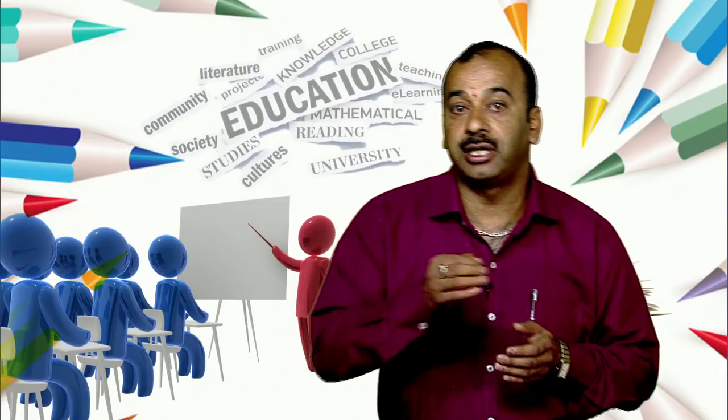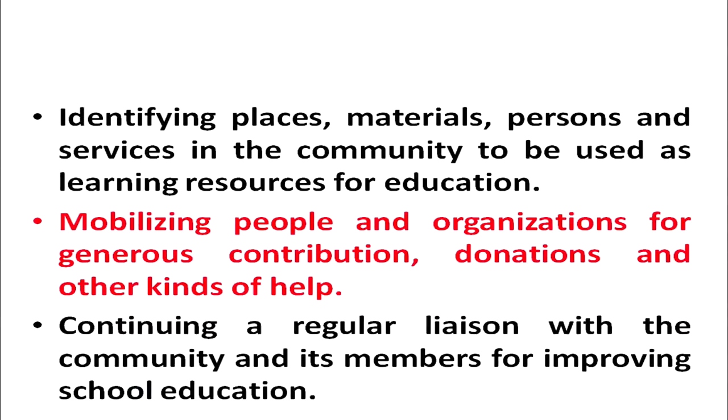Another role of community in development of learning resources is continuing a regular liaison with the community and its members for improving school education. A regular contact, regular liaison, and regular relationship must exist between the community, its members, parents, and school authorities so that school education can be improved to the maximum possible extent. A regular sharing between the community and the school is of utmost importance if we wish to use different resources available in the community for the educational upliftment of the area and betterment of the schools.